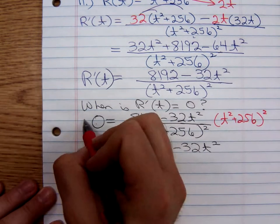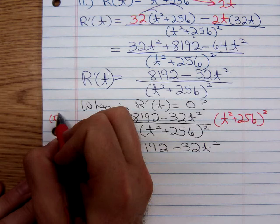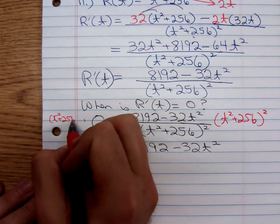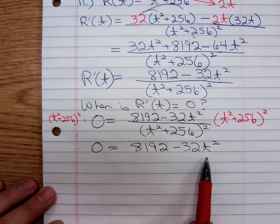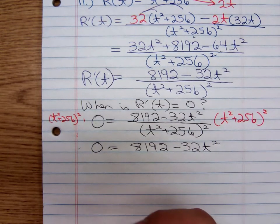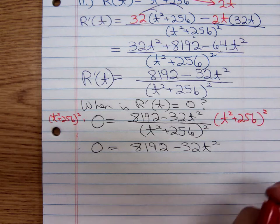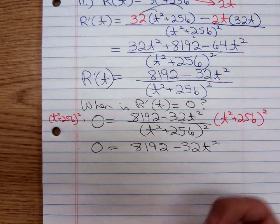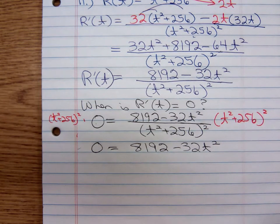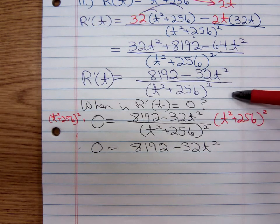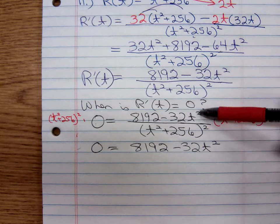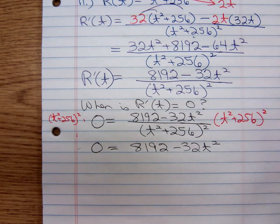If you have a fraction and you set it equal to zero, you can multiply both sides by that denominator, and all you're left with is the numerator. A fraction equals zero when the numerator is equal to zero. The value of the denominator doesn't matter. From here on in, if I have a fraction and I want to know when does it equal zero, I'm just going to ignore the denominator and set the numerator equal to zero.